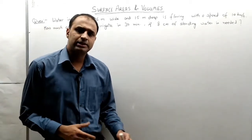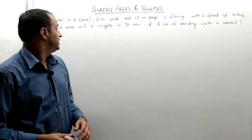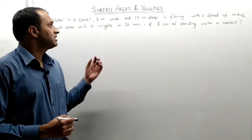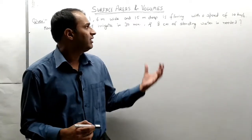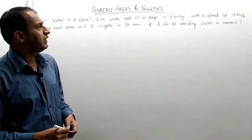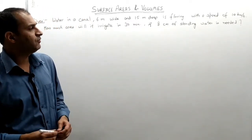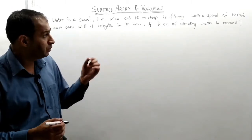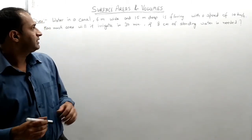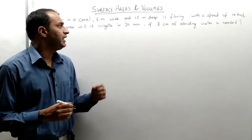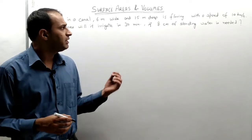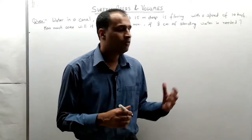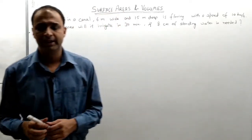Let us take this example. Water in a canal 6 meters wide and 1.5 meters deep is flowing with the speed of 10 kilometers per hour. How much area will it irrigate in 30 minutes if 8 centimeters of standing water is needed?